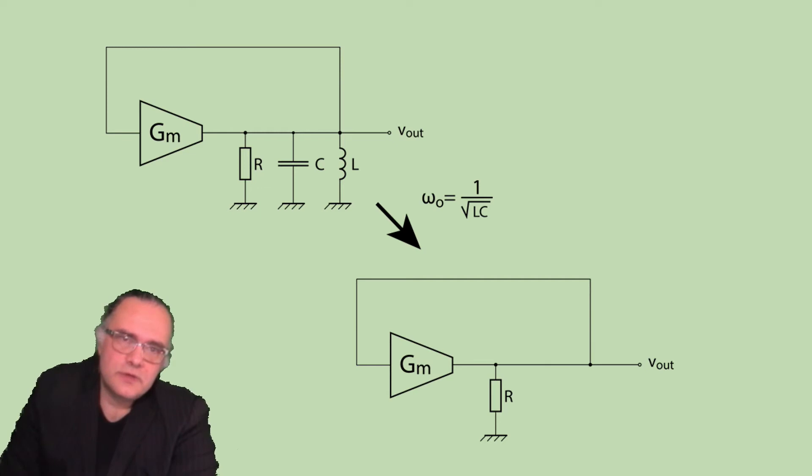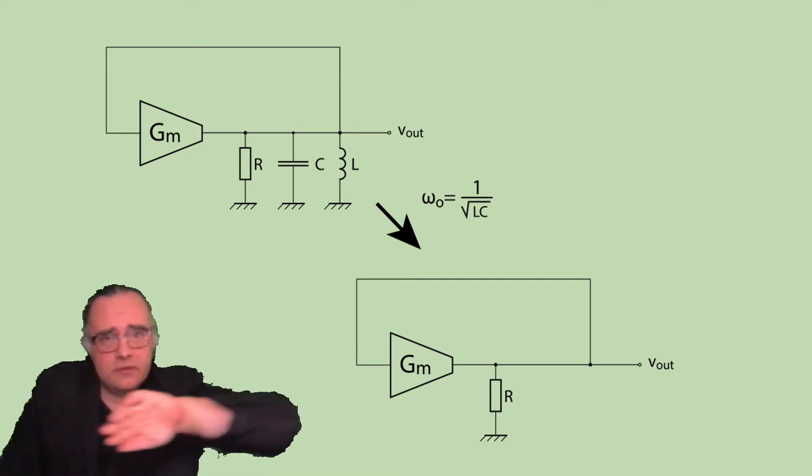At this resonance frequency the property of the LC tank is that its impedance block is infinite. And if its impedance is infinite we can just remove it from the circuit.